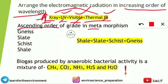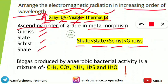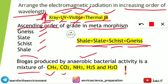The ascending order of grade in metamorphism from the options — gneiss, slate, schist, and shale — is: shale, then slate, then schist, then gneiss. This is the correct sequence. Another frequently asked question: biogas produced by anaerobic bacterial activity is a mixture of methane, carbon dioxide, ammonia, hydrogen sulfide, and water.